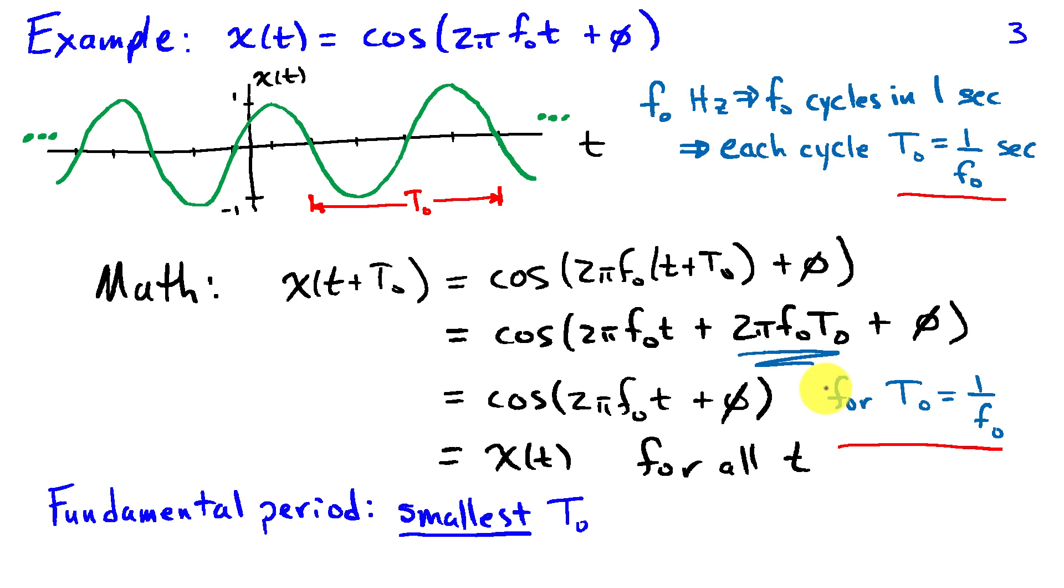Now it turns out that we could have chosen f naught t naught to be equal to some other integer other than 1. For example we could choose it to be 2 because if I shift the cosine by 4 pi I end up with the identical signal.